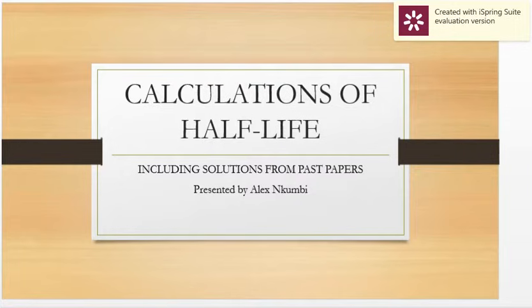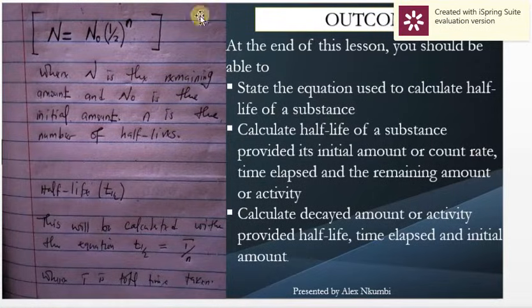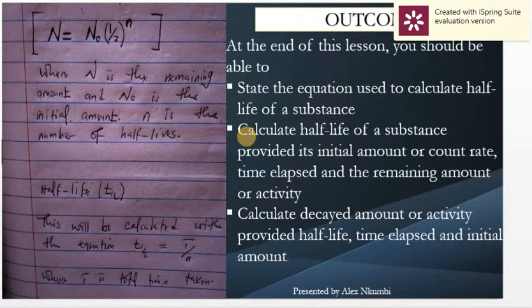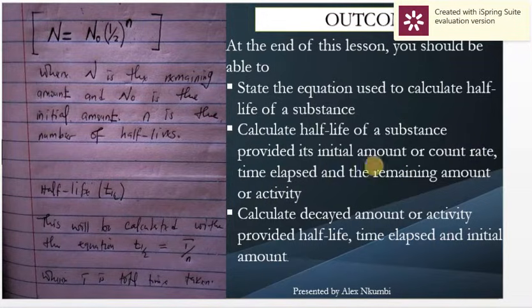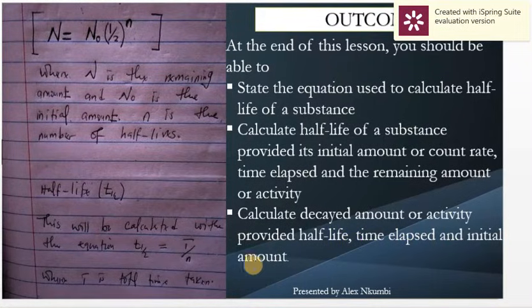Let us look at the outcomes for this lesson — what is expected of us during and after this lesson. The first outcome is that you should be able to state the equation used to calculate the half-life of a substance. The second outcome is that you should be able to calculate the half-life of a substance, provided you are given the initial amount or count rate, time elapsed, and the remaining amount or activity. You should also be able to calculate the decayed amount or activity, provided the half-life, time elapsed, and the initial amount are given.